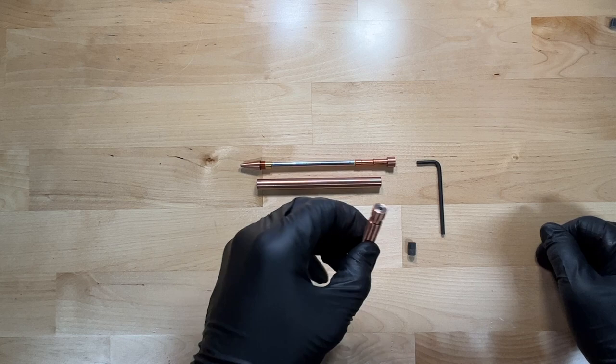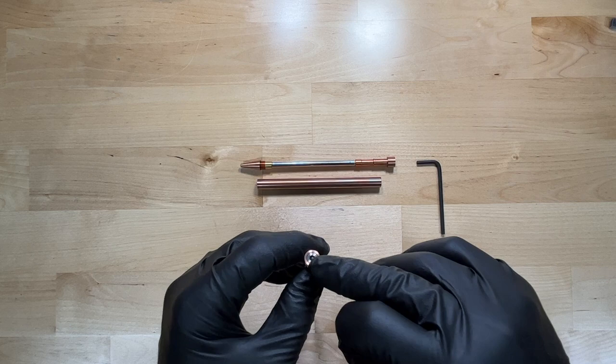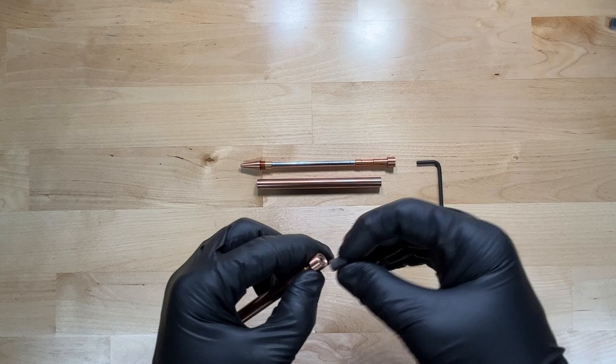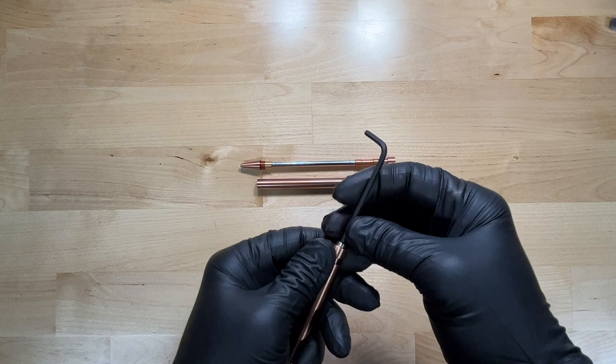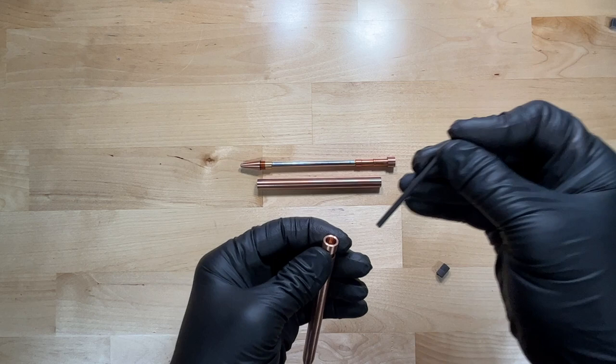The first thing you're going to do is take your click pencil. This one has the eraser plug installed if you chose that option. The eraser just pulls straight in and out or pushes in and pulls out. We're going to remove this eraser plug—this one has a steel eraser plug inside of a copper pencil—and set that to the side.